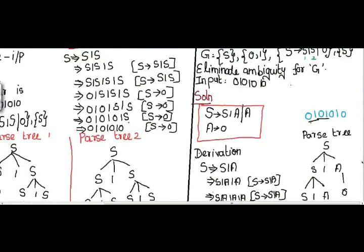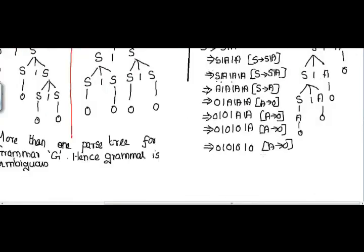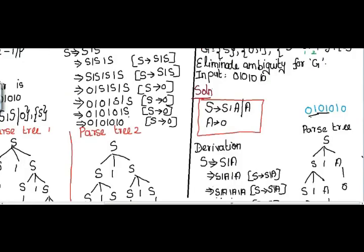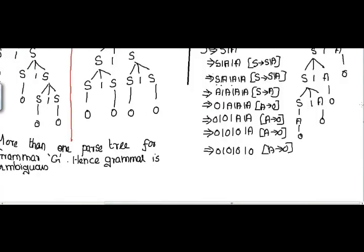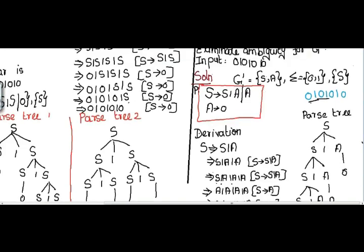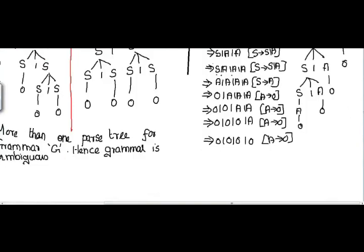After eliminating ambiguity, I can draw only one parse tree. Hence this grammar is unambiguous. The new grammar G' consists of two non-terminals S and A, the terminals sigma of 0 and 1, the production rules S → S1A, S → A, and A → 0, with start symbol S. Since you can draw only one parse tree for G', this grammar is unambiguous.